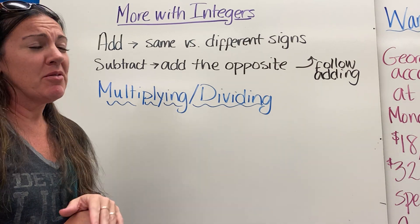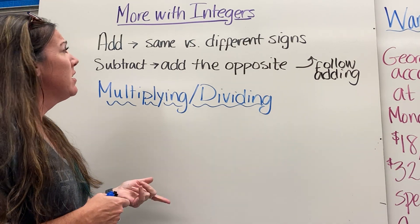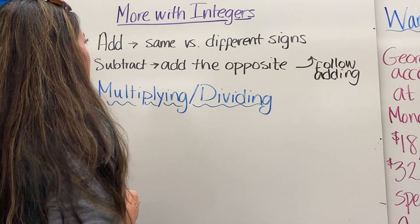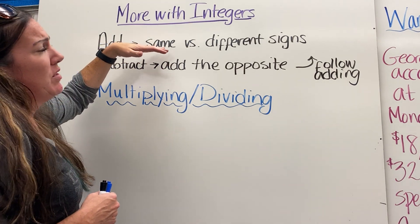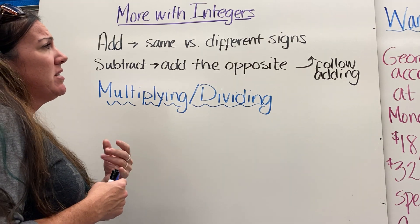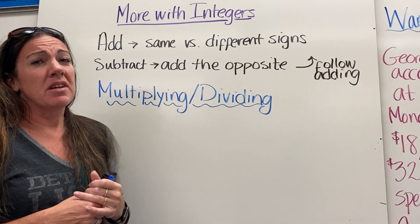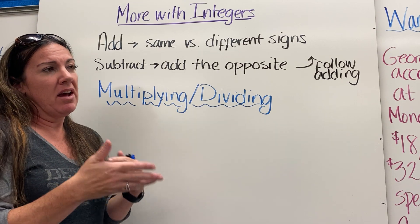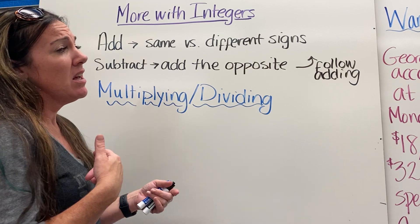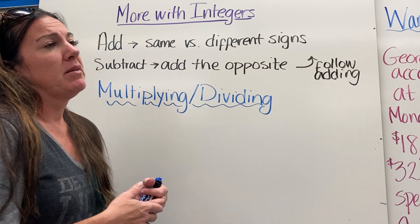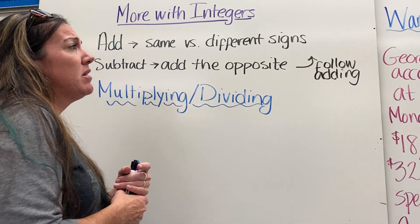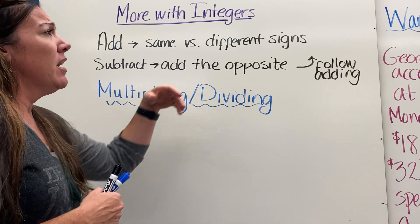Last time we talked about adding and subtracting integers. As a recap: to add, we looked at whether the numbers had the same signs or different signs. If they had the same signs, we just add their absolute values and keep the sign. For example, negative 3 plus negative 12 — that's like 3 plus 12 is 15, and since they're both negative, we keep the negative sign.